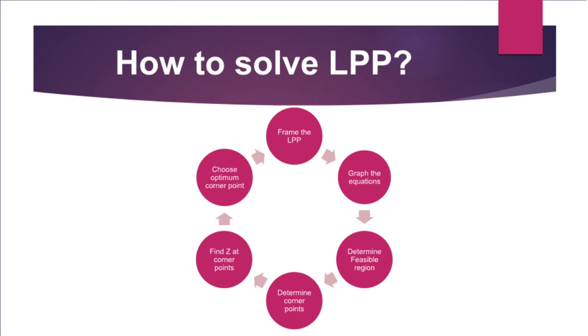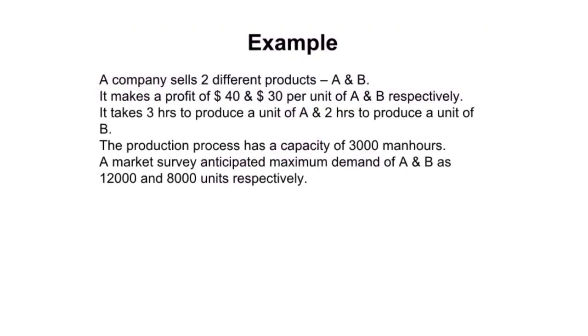Let's understand this with an example. A company sells two different products A and B. It makes a profit of $40 and $30 per unit of A and B respectively. It takes three hours to produce a unit of A and two hours to produce a unit of B. The production process has a capacity of 3,000 man hours. A market survey anticipated maximum demand of A and B is 12,000 and 8,000 units respectively.